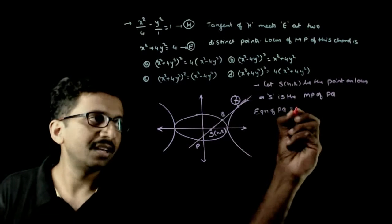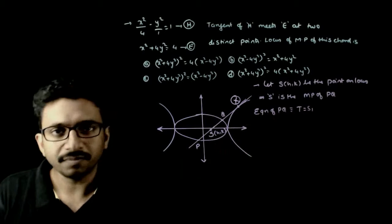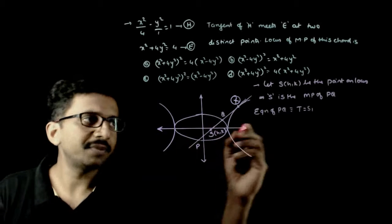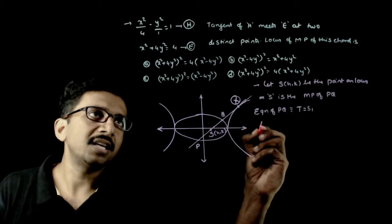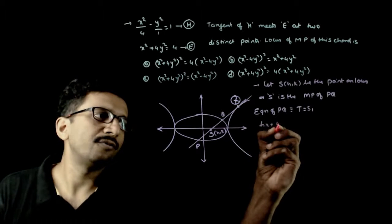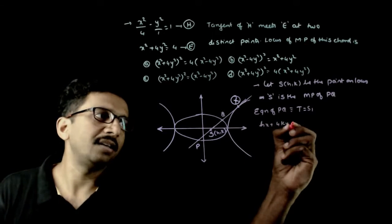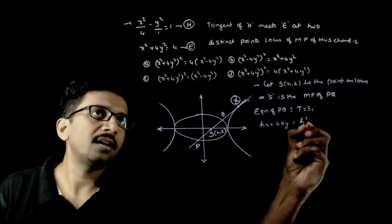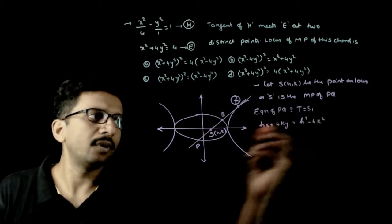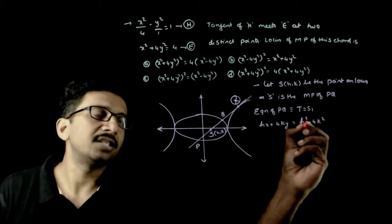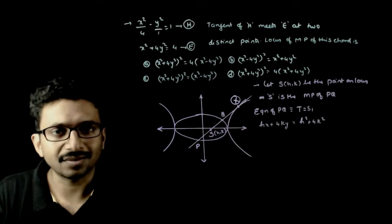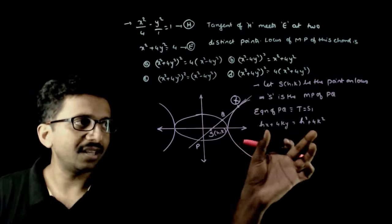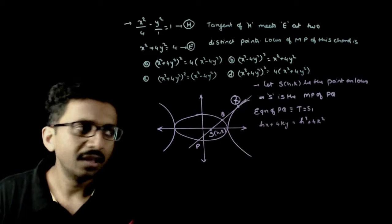The equation of PQ is T = S₁ with respect to the ellipse. So we get: hx + 4ky = h² + 4k². This is the equation of chord PQ.